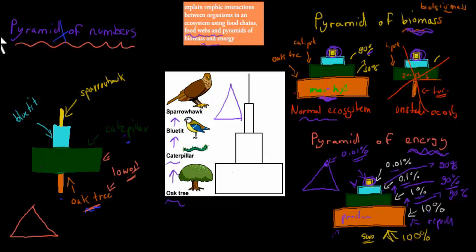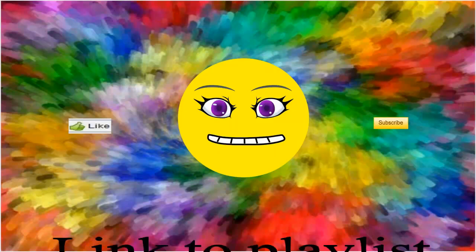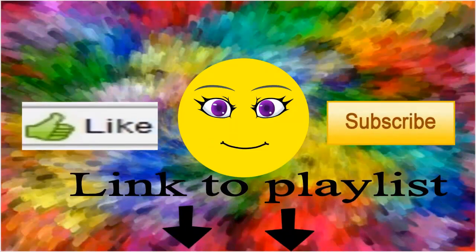What you need to know: you need to be able to explain what a food chain is, what a food web is, what a pyramid of biomass and energy are, and why we generally don't use the pyramid of numbers. I hope that was useful. Thank you for watching.